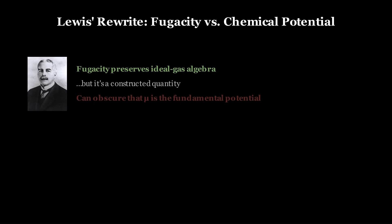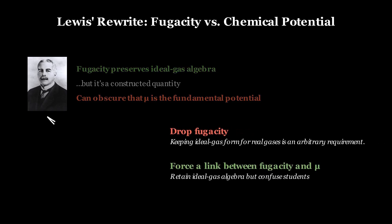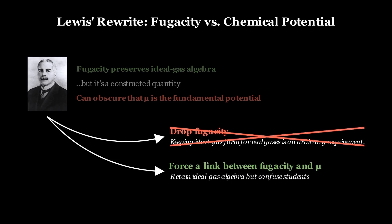Lewis recognized the shortcomings of fugacity. The only benefit it had is that it preserved the ideal gas equations for real gases, but it's a constructed property and not a fundamental one. He faced a choice. Abandon fugacity since its main appeal is preserving ideal gas algebra is an arguably arbitrary requirement or anchor it to the fundamental chemical potential. He chose the latter, redefining fugacity through μ and haunting future chemical engineering students with this concept.